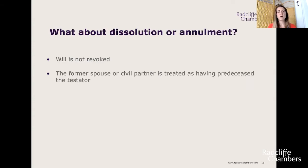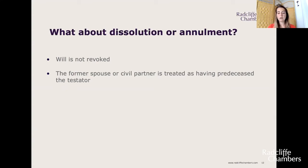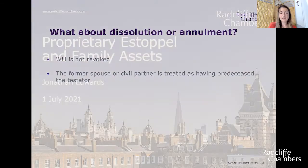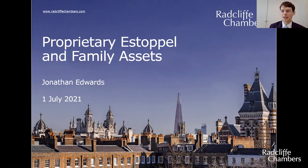What about divorce, dissolution, or annulment? Those don't actually lead to automatic revocation. Where marriage or civil partnership comes to an end by dissolution or annulment, the will takes effect as if the former spouse or civil partner has predeceased the testator, unless a contrary intention is expressed in the will. Their rights to claim under the 1975 Act are preserved. That brings the first presentation to a close.